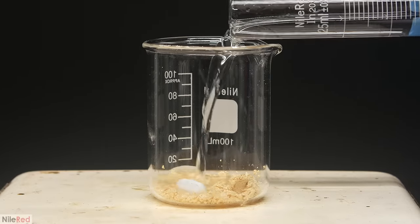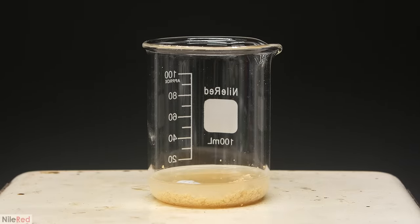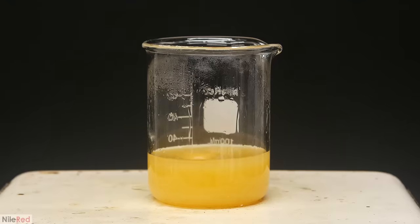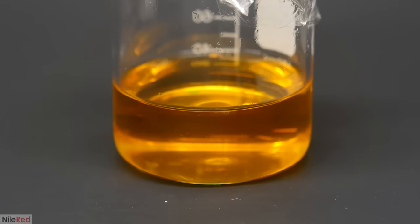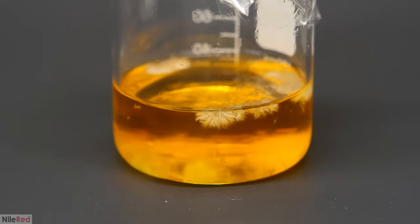On top of it, I added a stir bar and some ethanol, and I turned on the heating. I then kept adding more in small amounts, until it was all dissolved. I took it off the hot plate, and as it cooled, some really nice white crystals formed.